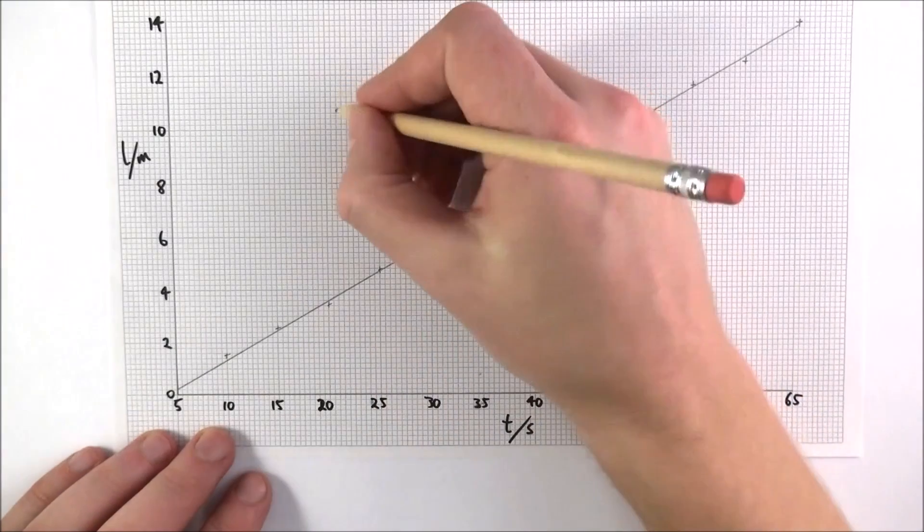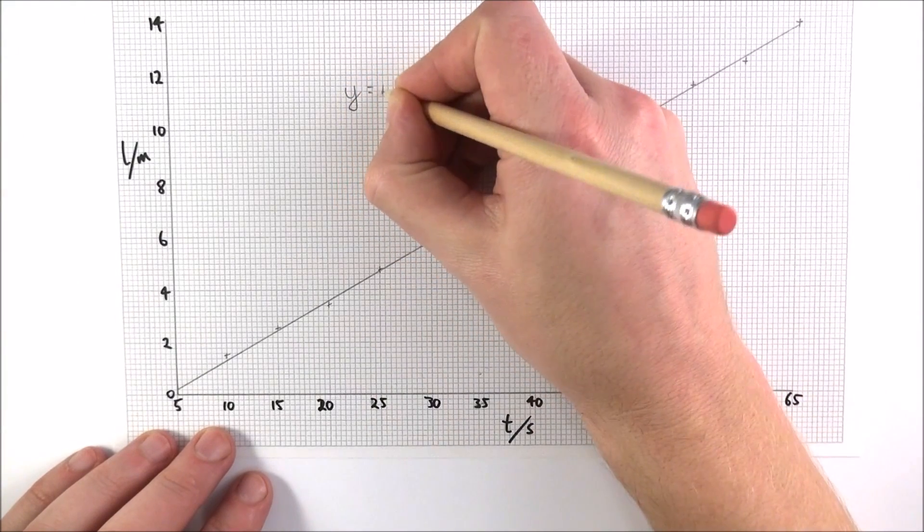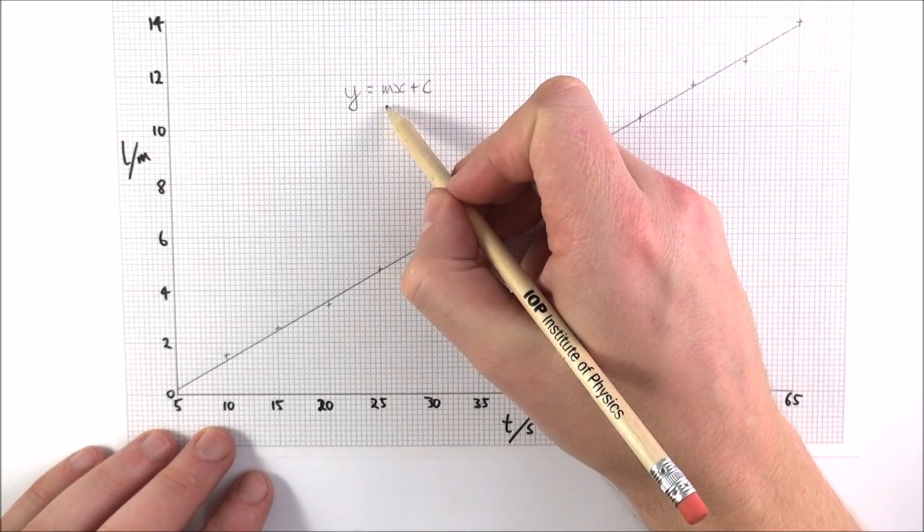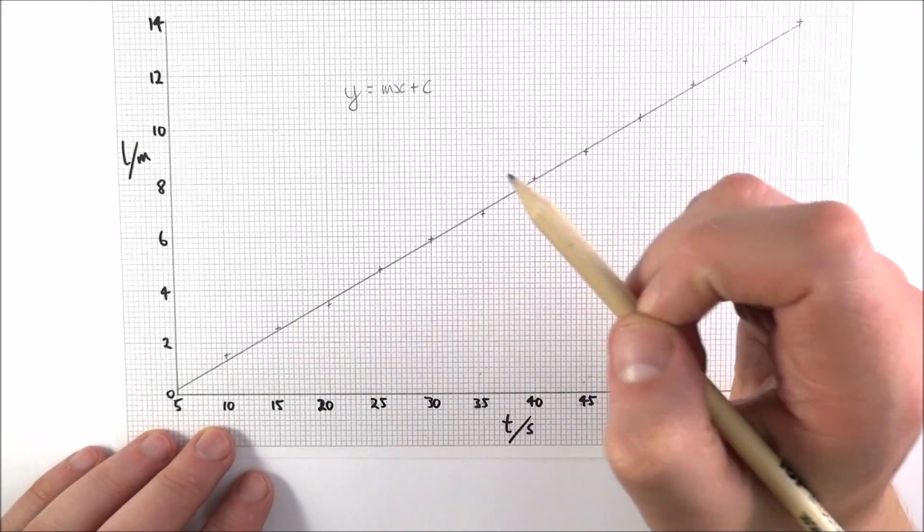Now what we know about this line is that it has the formula y is equal to mx plus c. So we have m is the gradient and c is the y-intercept.